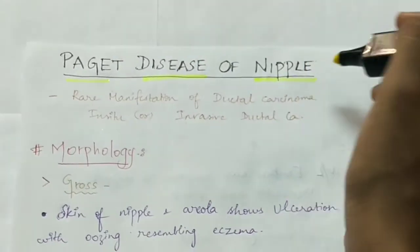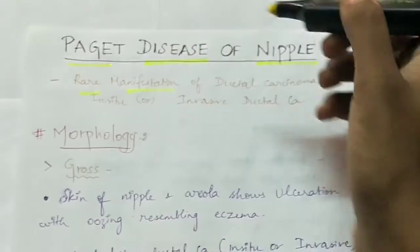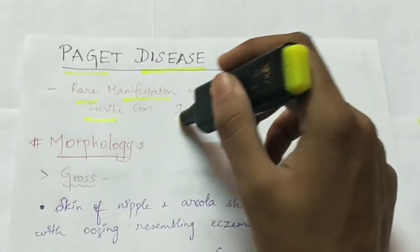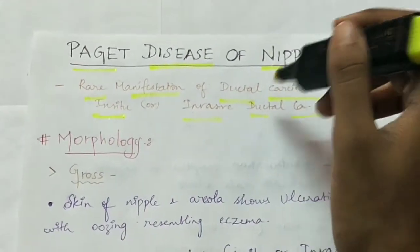Paget's disease of the nipple. Paget's disease of the nipple is a rare manifestation of ductal carcinoma in situ or invasive ductal carcinoma. This is a manifestation of ductal carcinoma.